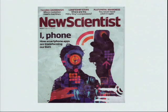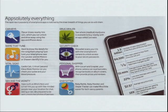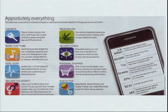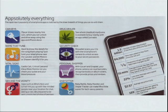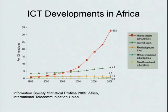A New Scientist issue had just come out talking about how smartphone apps are transforming our lives, with examples like software to help you find where to buy medicinal marijuana or figure out what song is playing. These are applications some people might find cute or useful, but I think it's inaccurate to say they're transforming people's lives. In contrast, if you look at the use of mobile phones in other countries, they are transforming people's lives.